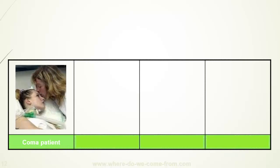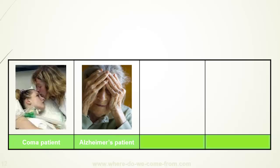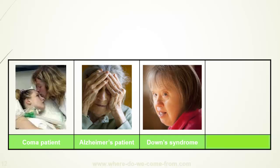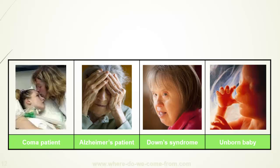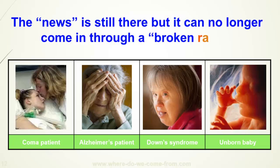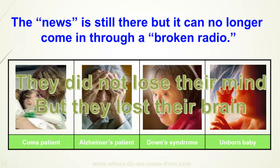A coma patient has some defects in the brain. An Alzheimer patient may have some defects in the brain. A child with Down syndrome may not have the perfect brain. And an unborn baby has a brain that is not fully developed yet. Does that mean they have a broken mind? Maybe they have a broken radio, a broken brain, but the news is still there. So they did not lose their minds, but they lost part of their brains.